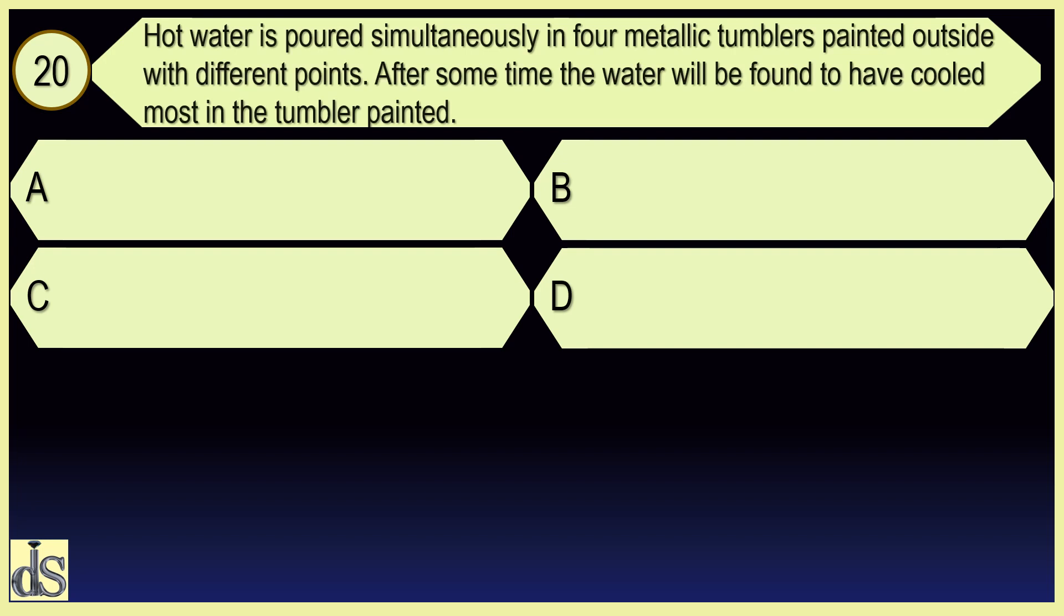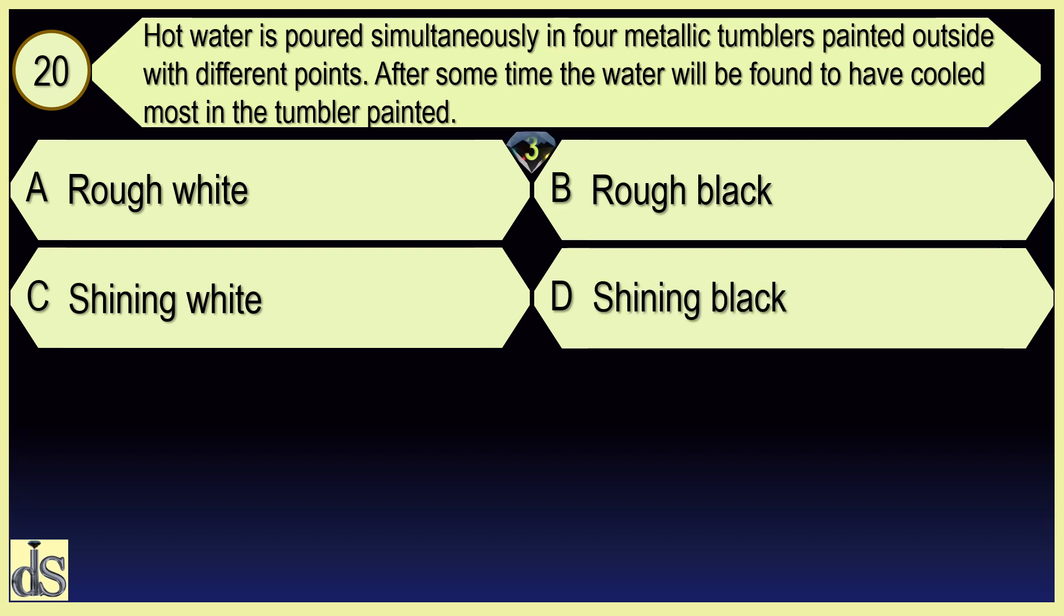Hot water is poured simultaneously in 4 metallic tumblers painted outside with different paints. After some time, the water will be found to have cooled most in the tumbler painted rough black.